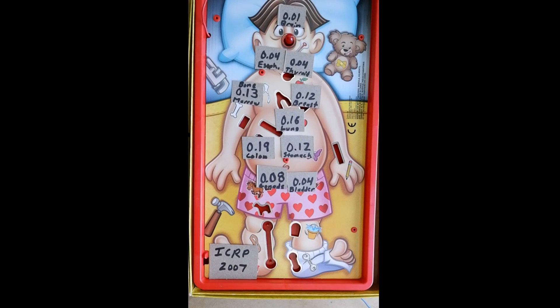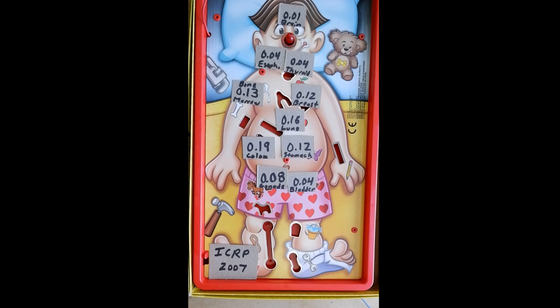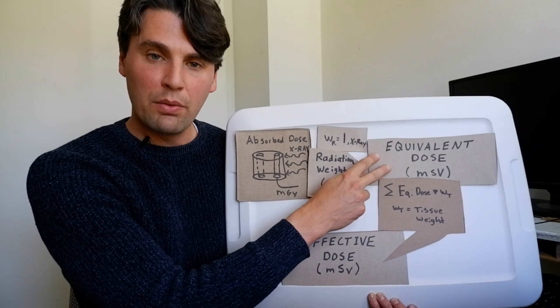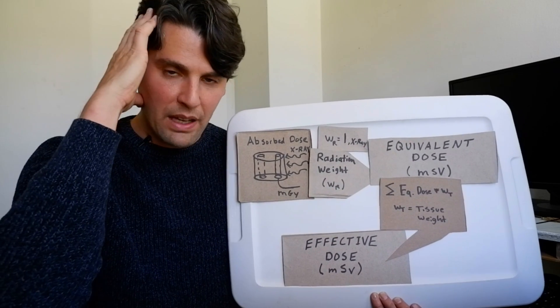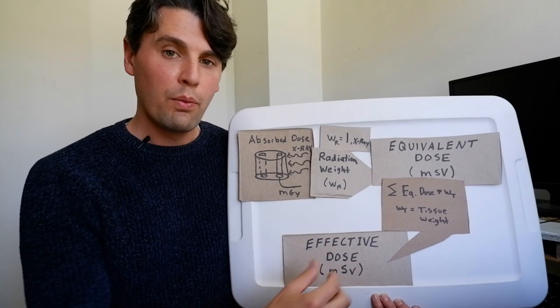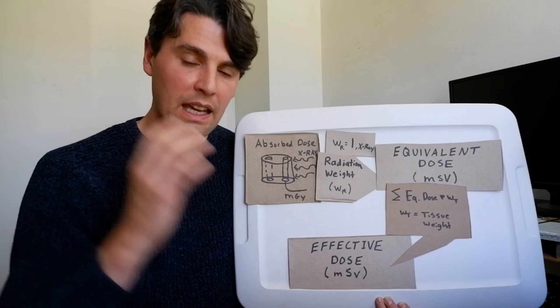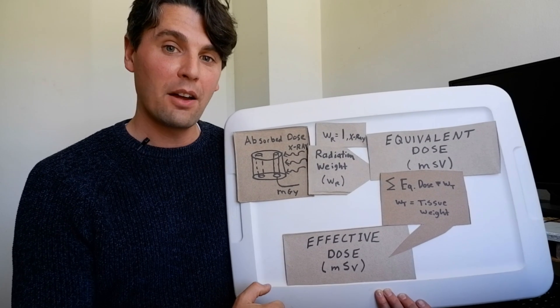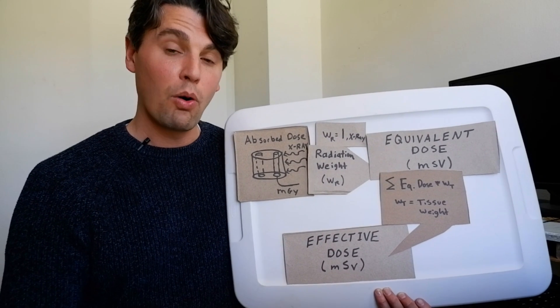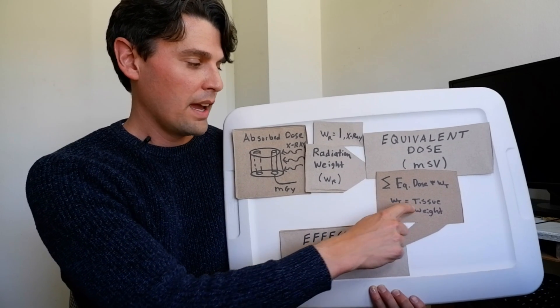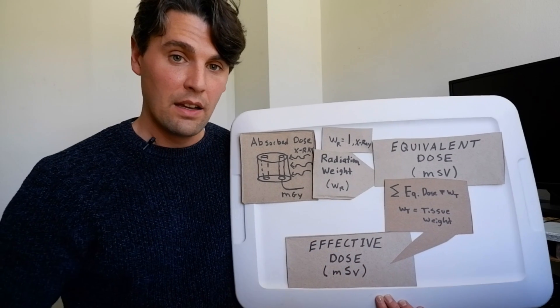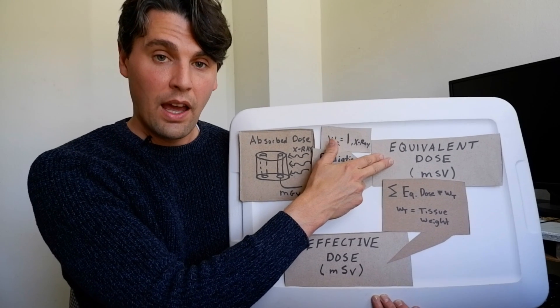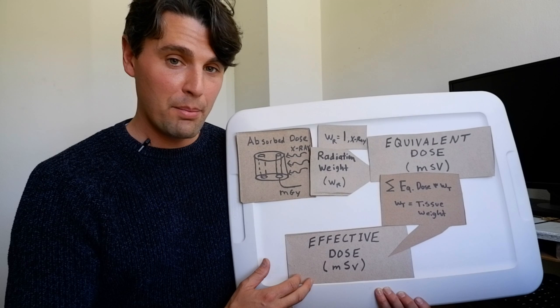So what we do is we just say once we have our equivalent dose and we know how much dose was given to the different parts of the body, we take that equivalent dose and we multiply each region in the body by a weighting factor. So those weighting factors will then add up to one. We think about a dose to the whole body, those radiation factors will add up to one, and that's just what we call our tissue weighting. So again, going from absorbed dose in milligray to equivalent dose in millisieverts and then to effective dose also in millisieverts.